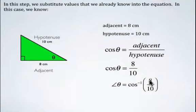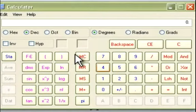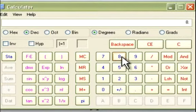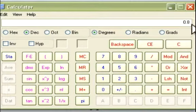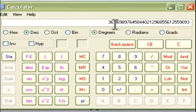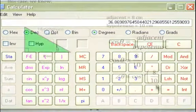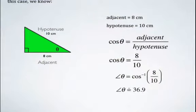Now we're going to use our calculator. We're going to get in the habit of using the brackets, so it's 8 divided by 10 and close the brackets, which is 0.8. We're going to find the inverse cosine of 0.8, and that's 36.869. This is the one we were looking at previously, and we find that angle theta is equal to approximately 36.9 degrees.